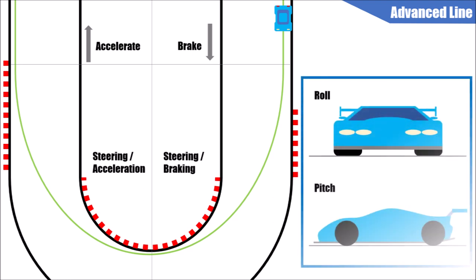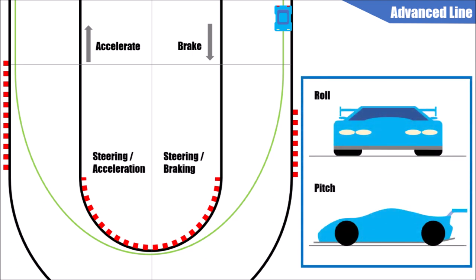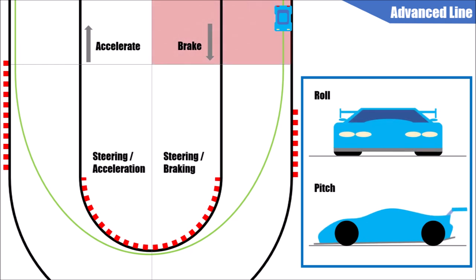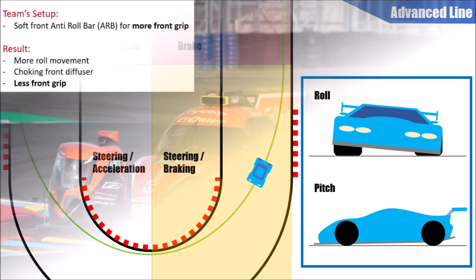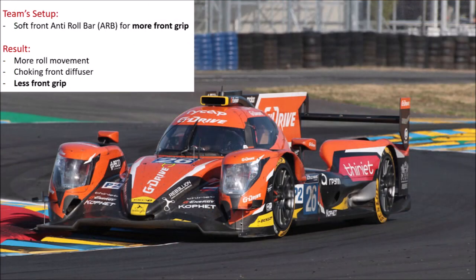Let's have a closer look at body movement on the advanced line. Straight-line braking is the same as the classic line, but when we start steering under braking, the car is pitching and rolling at the same time — this brings the front diffuser very close to the ground. This can choke the front diffuser, resulting in less downforce for the outboard front wheel, which means less grip and understeer. For example, a team may set up the car with soft anti-roll bars for more mechanical grip at the front, which works in slow corners, but in medium and high-speed turns the car understeers because it is rolling too much and the front diffuser cannot work properly. In that case, it would make sense to install stiffer anti-roll bars to avoid understeer, even though it goes against common sense.